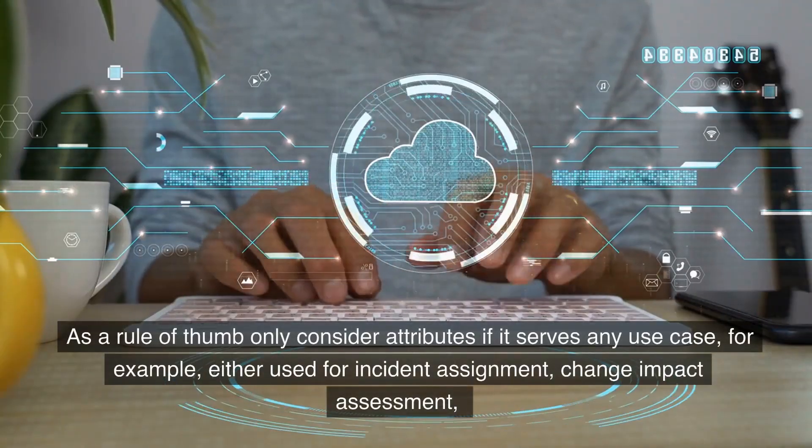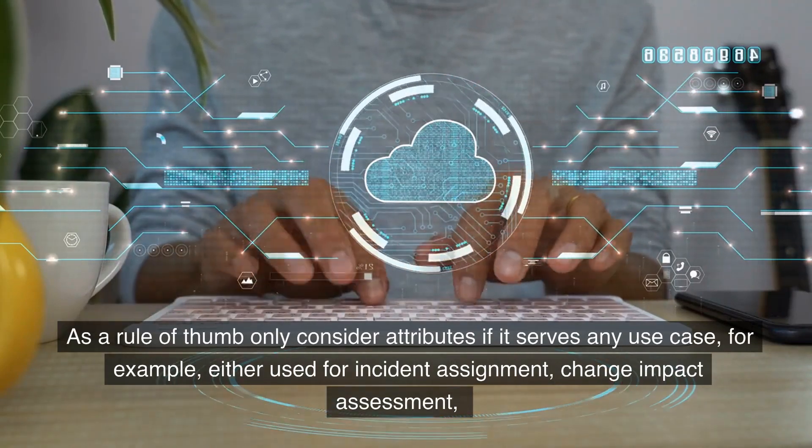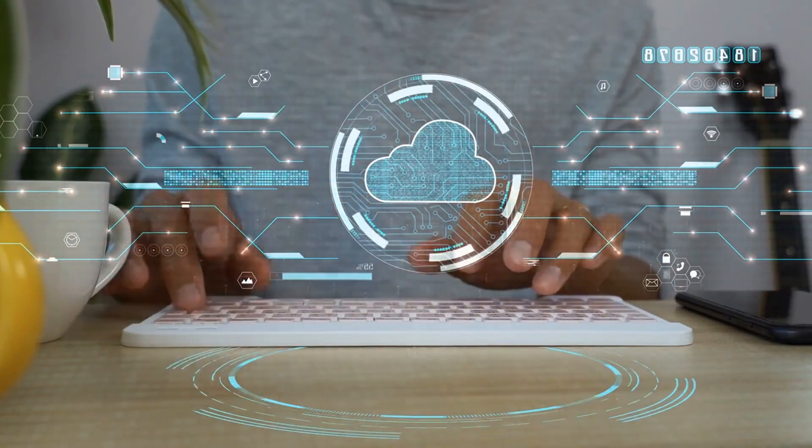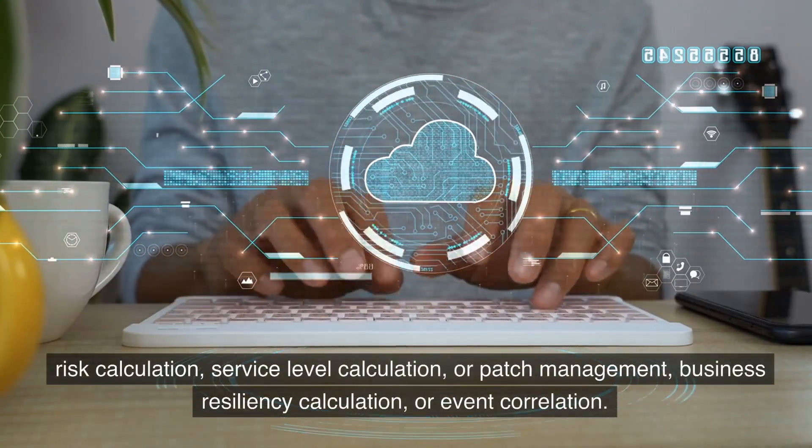Hence, it is very important to carefully choose attributes for a CI class you want to manage in the CMDB. As a rule of thumb only consider attributes if it serves any use case, for example, either used for incident assignment, change impact assessment, risk calculation.